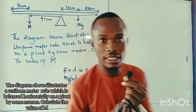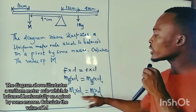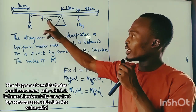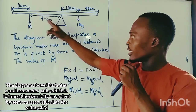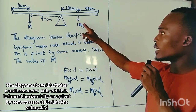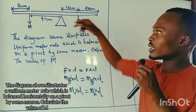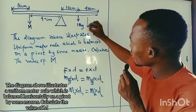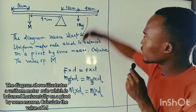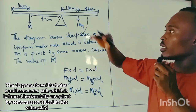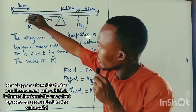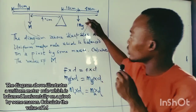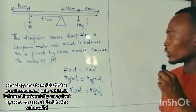In this equilibrium, we use the mass of one object multiplied by its perpendicular distance, equal to the mass of the other object multiplied by its perpendicular distance. This side represents the clockwise moment, and the other side is the anticlockwise moment. We equalize them to solve the problem.